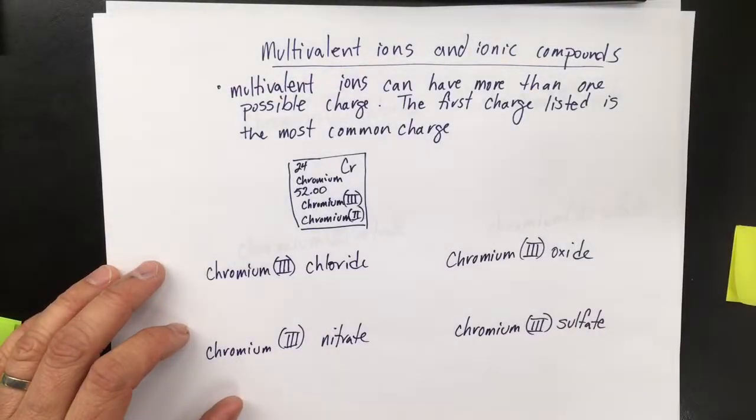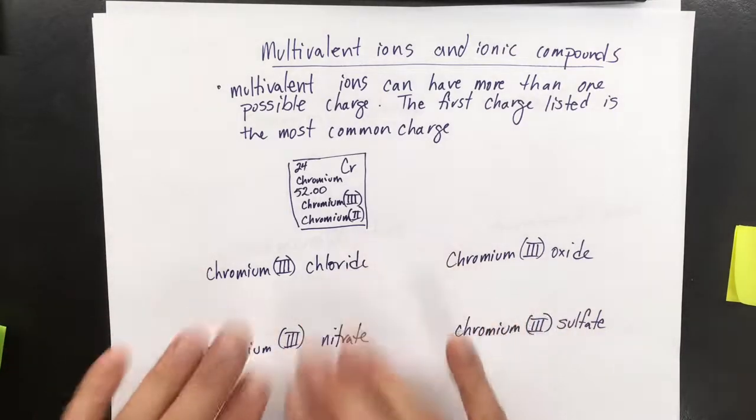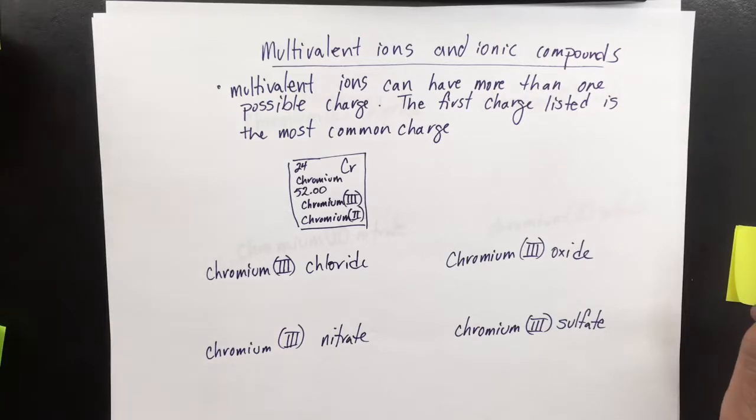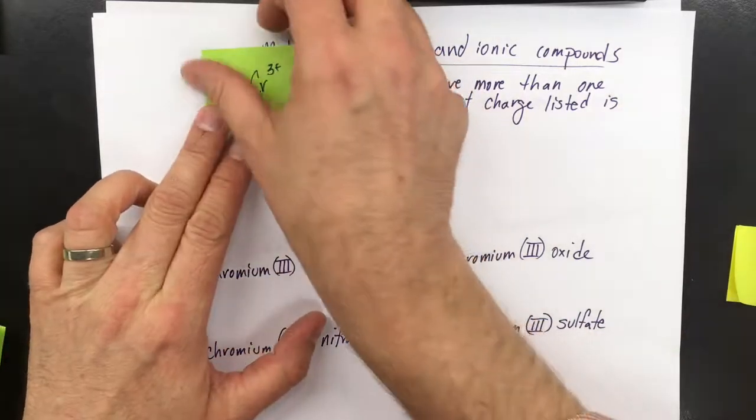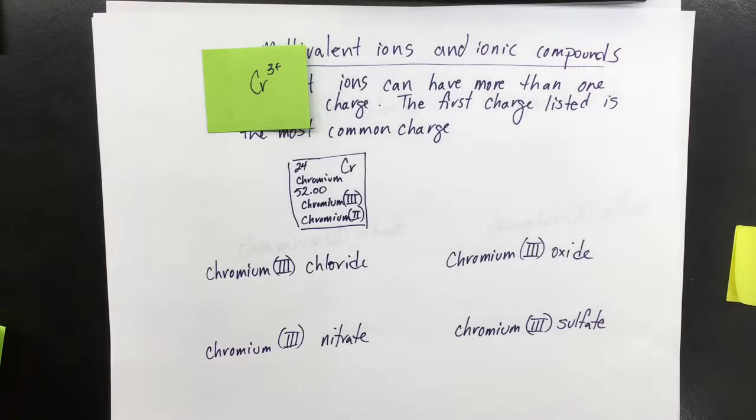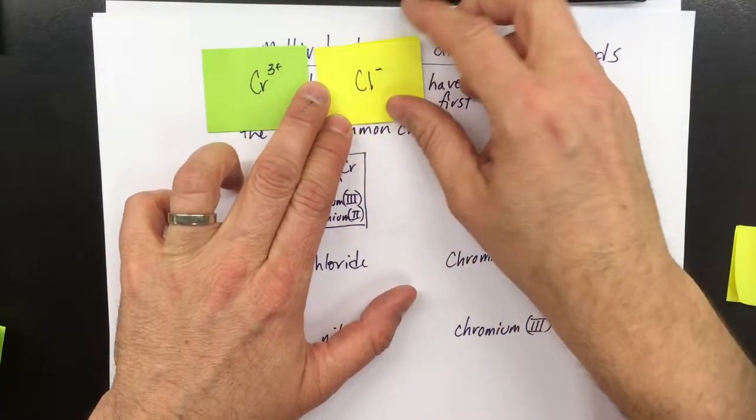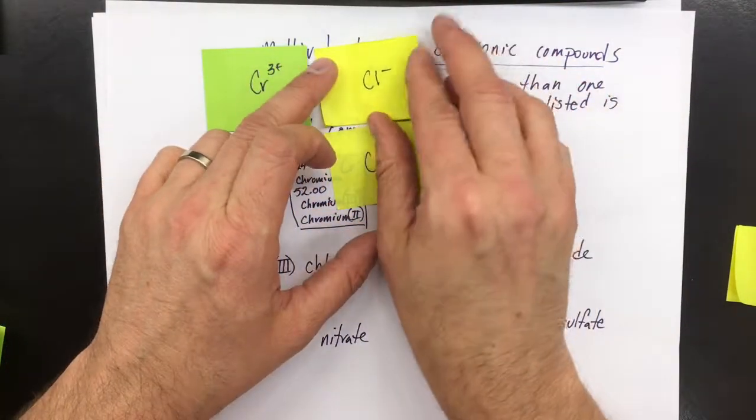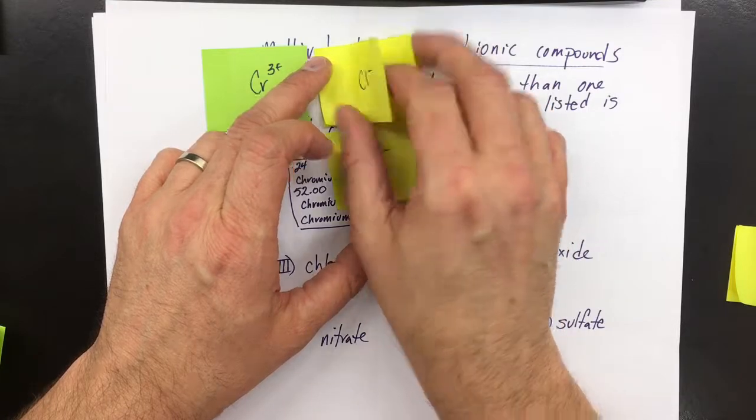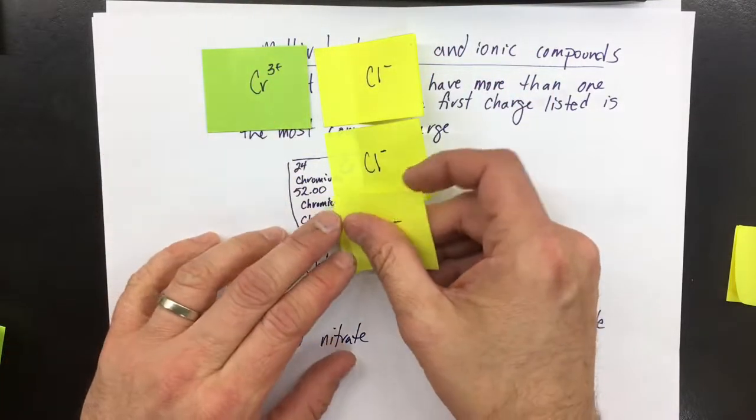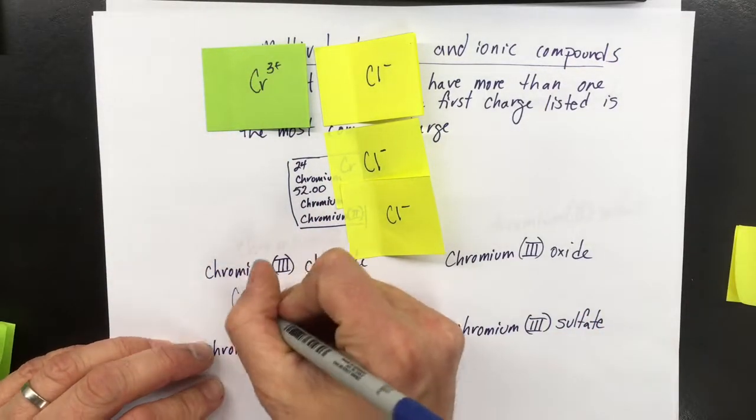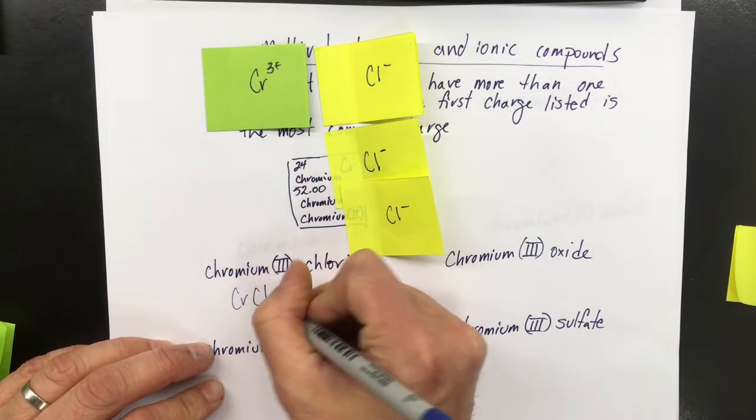When we're coming up with the formulas from the names, you can see that chromium(III) chloride - chromium(III) has the 3+ charge, and chloride has the 1- charge. To balance the charge, I need three 1- charges and one chromium(III). So its formula will be CrCl3.